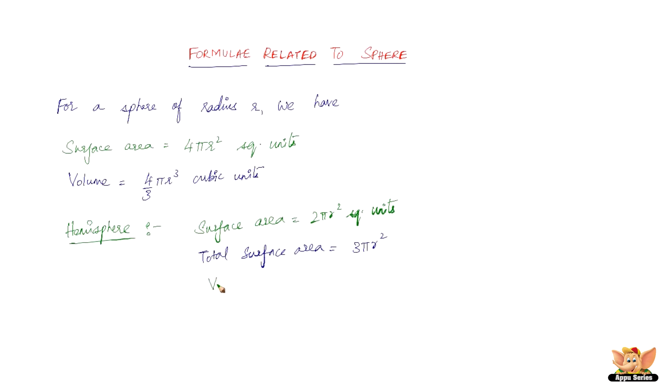And then, we've got the volume of a hemisphere, that is a half sphere, which is 2 thirds pi r cube cubic units. This is the half of the volume of a sphere. And I forgot to mention that the total surface area is 3 pi r square square units.